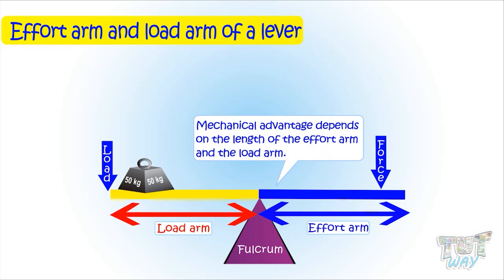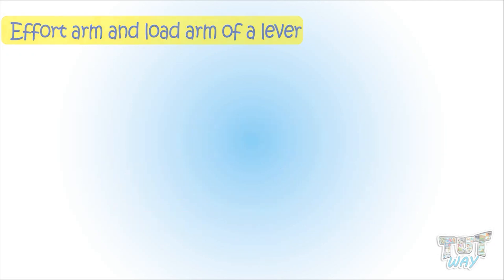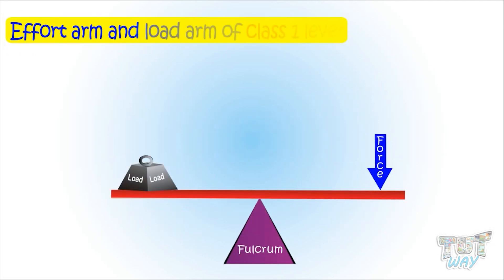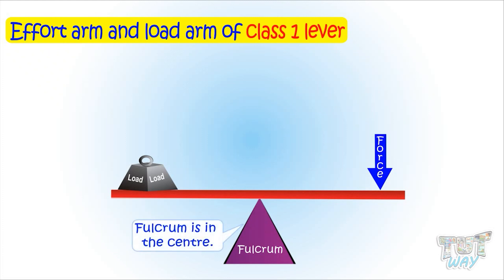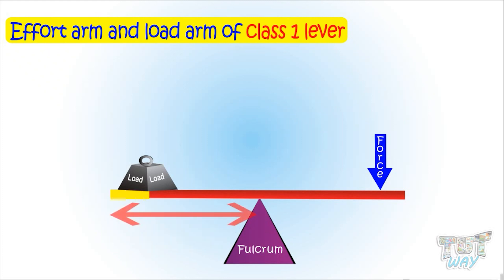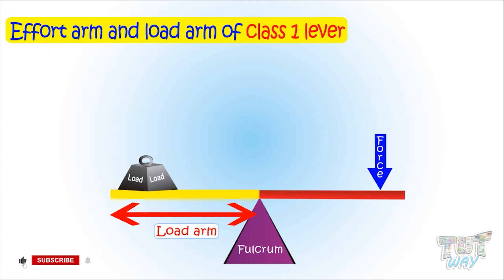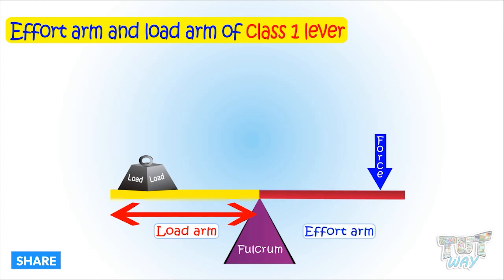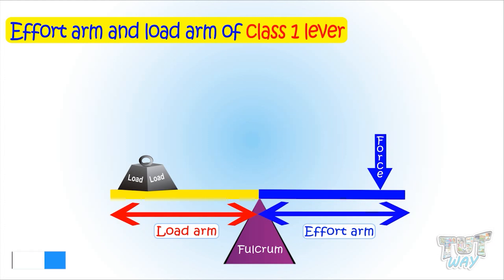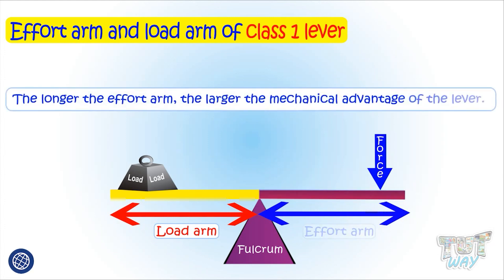Now let's see the effort arm and load arm of different types of levers. In a class 1 lever, which has the fulcrum in the center, the load arm is the distance between the load and the fulcrum, and the effort arm is the distance between the effort and the fulcrum. Remember, the rule is that the longer the effort arm, the larger the mechanical advantage of the lever.